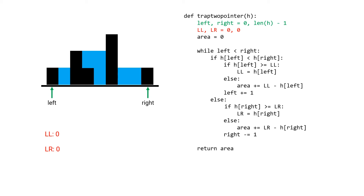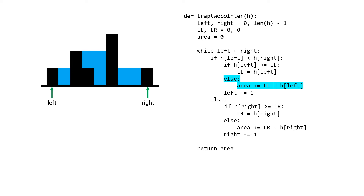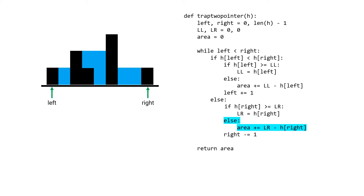Putting this together gives us a two-pointer approach. We start two pointers at the ends of the array and use two variables — largest left and largest right — to track the boundaries seen so far. While the left pointer remains to the left of the right pointer, we check whether the left or right height is smaller. If the left height is smaller and the current height is greater than the largest left, we update the largest left and advance the left pointer. Otherwise there is a dip and we calculate units of water and add to the area. If the right height is smaller or equal, we do the same on the right side.